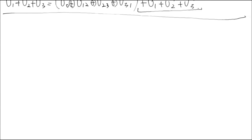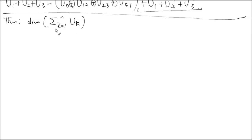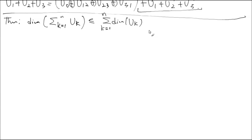Let me introduce another important theorem: the dimension of the sum of subspaces u1 through un is less than or equal to the sum of the individual dimensions. That is, dim(u1 + u2 + u3) ≤ dim(u1) + dim(u2) + dim(u3). This holds for any number of components. There is an inclusion-exclusion relationship, so we don't always have equality. You're always overdoing it on the right-hand side.